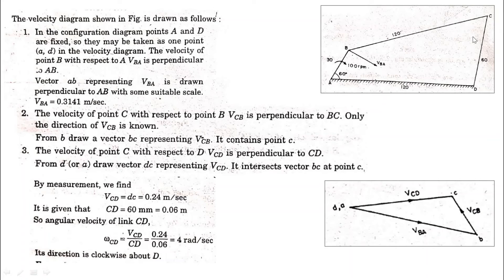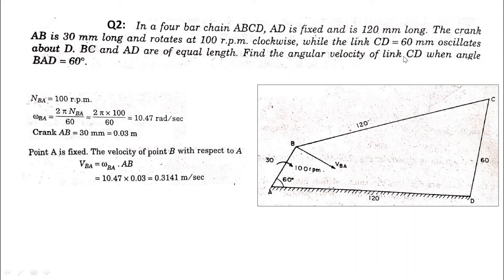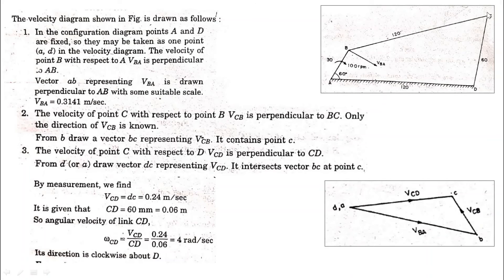In the same way, we consider point C and draw another line here. We consider point C with respect to point D. This will act perpendicular to this line CD, and we will draw another line here representing the velocity of point C with respect to point D. vcd, we draw a line here.